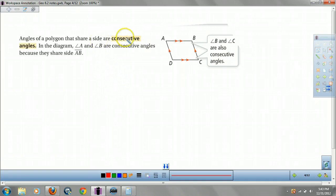Angles of a polygon that share a side are consecutive. Consecutive means, like C and B, they share that side. They're on the same side. C is also consecutive with D, right? Because they share that side. If you share a side, you're consecutive. There's a road between our houses. They're consecutive.